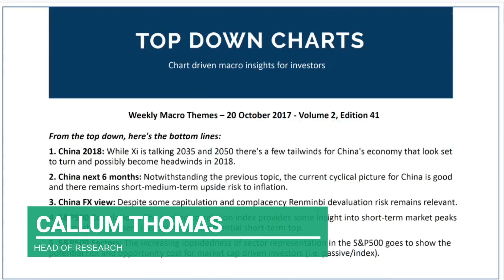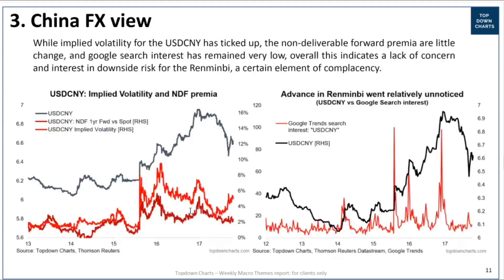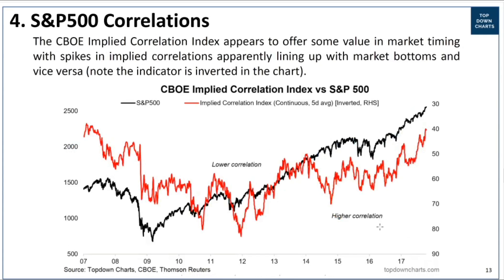Welcome to another video. We were out of action last week because I was in Australia visiting clients, but this week we're back. This time we're going to be looking at topic number four in this edition of the weekly macro themes from a few weeks ago - S&P 500 correlations. It's a pretty interesting indicator, very much a cousin to the CBOE VIX or implied volatility index, also based on the S&P 500 and derived from option prices.